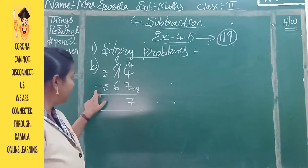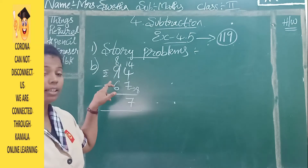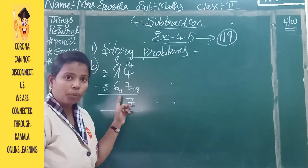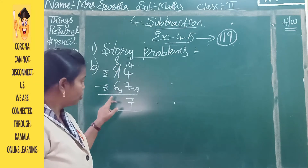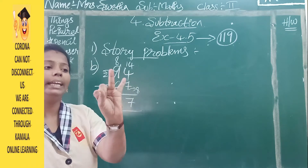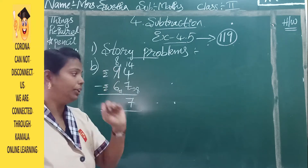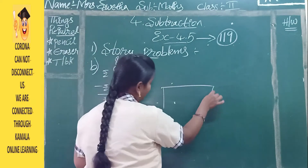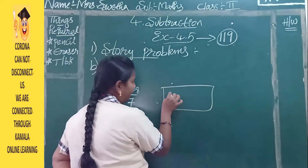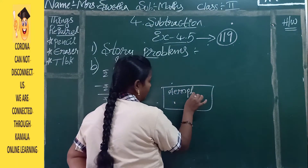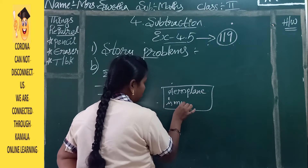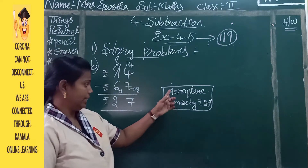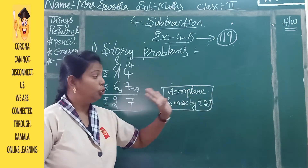Now 8 minus 6 in the tens place. After 6 is 7. Start counting at 7 and stop at 8 — seven, eight — that is 2 fingers. So 94 minus 67 equals 27. The airplane costs more by rupees 27. Write in the box: 'Aeroplane is more by rupees 27.'